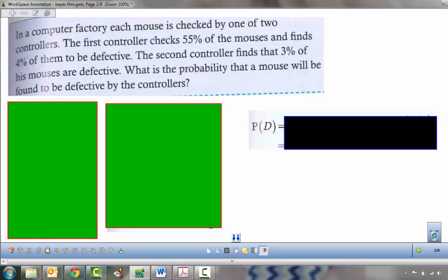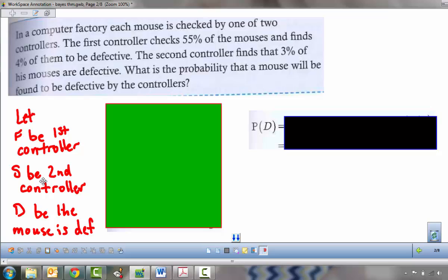And we're going to look at a computer manufacturing computer mice. It's checked by one of two controllers. The first controller checks 55% of the mice, finds 4% to be defective. The second finds that 3% of his mice are defective. What is the probability that a mouse would be found to be defective by the controllers? The first thing we should do is define our variables. F is that the first controller is checking. S is the second controller checking. D would be the mouse being defective.